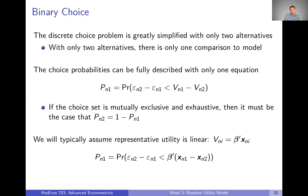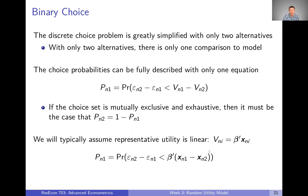So once we define one, we get two for free, basically. We also said previously that we're going to typically assume that representative utility is linear. So V_nI is just a vector of parameters beta times the vector of data X. Plugging that in for both V terms, we get that the choice probability for alternative one is the probability that this random variable — the difference between epsilons — is less than this linear function of our data.